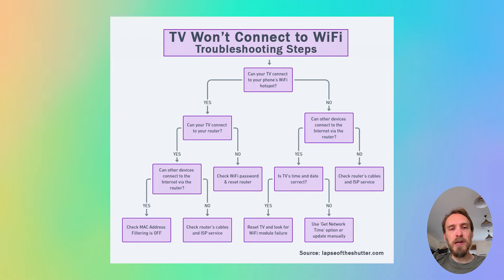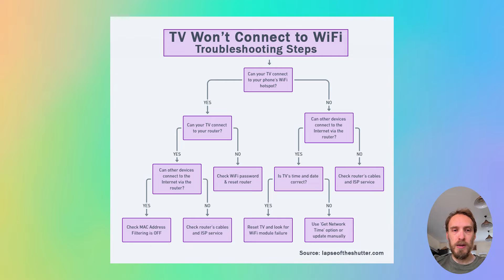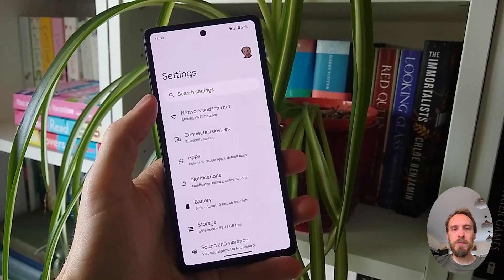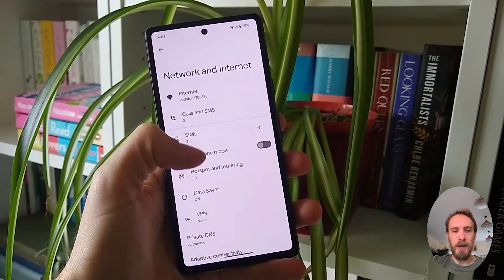The first step is to determine if the problem is with your TV itself or with your Wi-Fi router. To help localize the problem, set up a hotspot on your phone and connect your TV to it. You can set up a hotspot on iPhones from the Personal Hotspot option, and on Android from Hotspot and Tethering within Network and Internet settings.